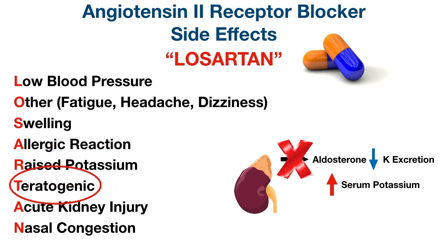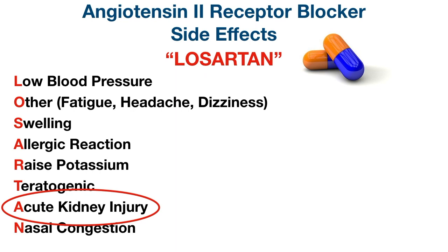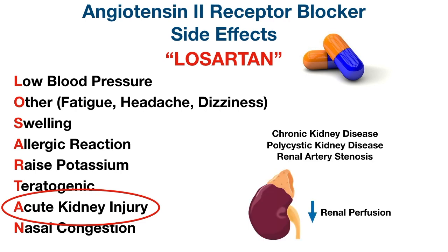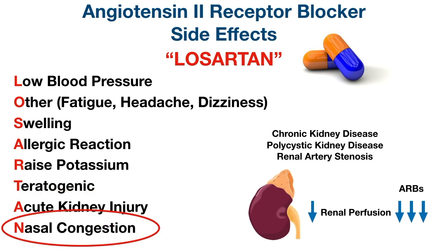T stands for teratogenic — ARBs should be avoided in pregnancy. A stands for acute kidney injury, which can occur especially when first starting an ARB. While ARBs are generally renal protective, if a patient already has underlying conditions causing poor renal perfusion — such as chronic kidney disease, polycystic kidney disease, or renal artery stenosis — then ARBs could worsen perfusion, so monitor renal function closely. N stands for nasal congestion — ARBs can cause upper airway side effects including nasal congestion or drainage.